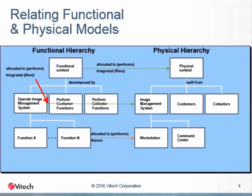Here we can see the allocation of functionality from the behavior hierarchy to the physical hierarchy. This shows a progressive allocation as the design is advanced from the highest level of abstraction — the functional context to the physical context — through the decomposition of the layers, from the operating image management system to the image management system, to the final allocation of the atomic functions to the components: workstation and command center.